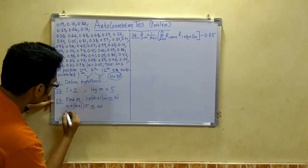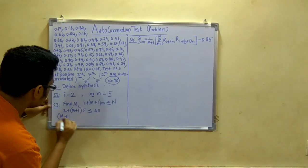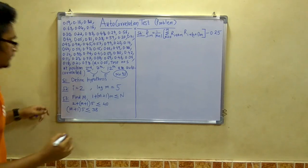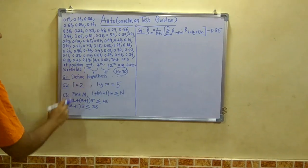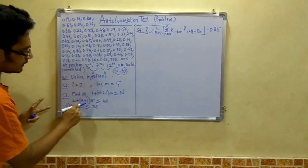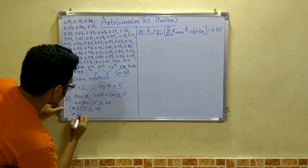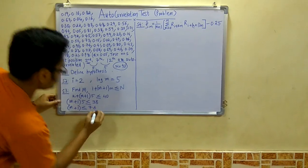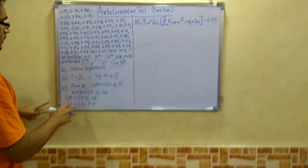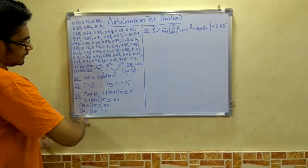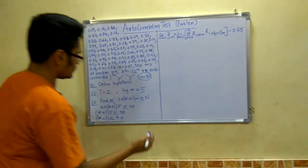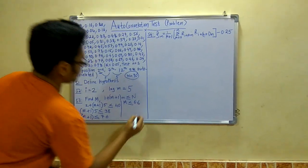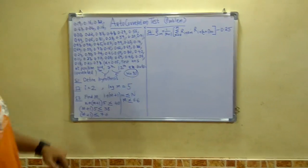Next you have to solve this. So I will take this to that side. So that is m plus 1 multiplied by 5 less than equal to 38. Now divide that 5 or take the 5 on the other side. You get m plus 1 is less than equal to 7.6. Now open this bracket and take the 1 on the other side. So you will get m less than equal to 6.6.